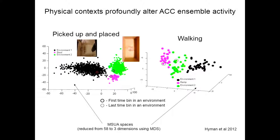First, I'll talk about physical context and remapping of neuronal activity. This is from a paper we published a few years ago that my postdoc James Hyman did. It couldn't be simpler — you just take the animal and move them between contexts, different physical environments with different shapes. This produces really widespread changes in activity patterns — it doesn't increase or decrease activity, it just produces widespread shifts. These emerge basically as soon as you put the animal in a different environment. This was a 58-neuron ensemble reduced to three dimensions using multidimensional scaling. You have separation in the clusters and things snap into new states as they enter new environments.